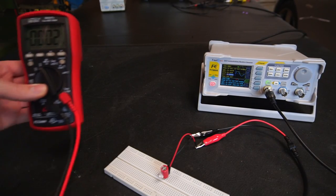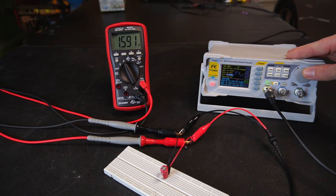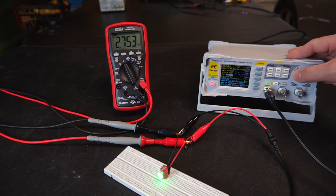I'll replace the scope with a multimeter and set it to measure DC volts. You can see I have complete control over the output voltage by varying the duty cycle on the generator. This is how a buck converter controls voltage.